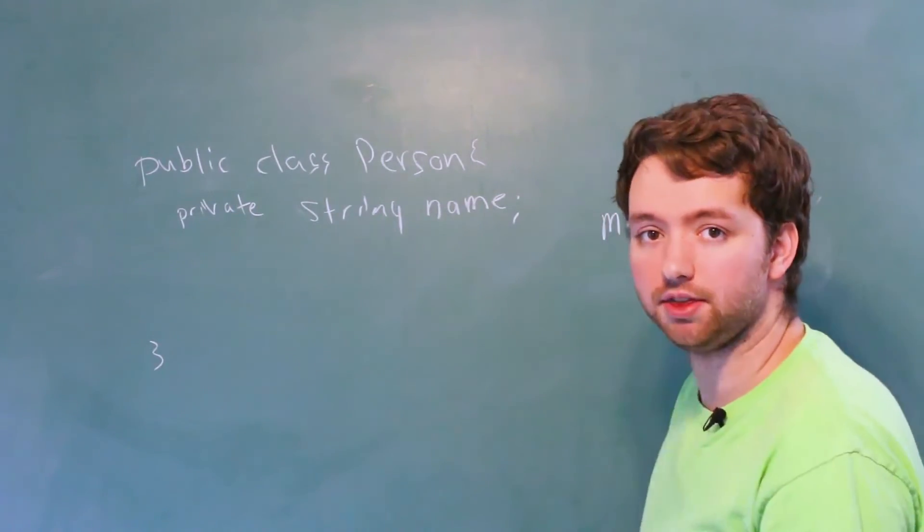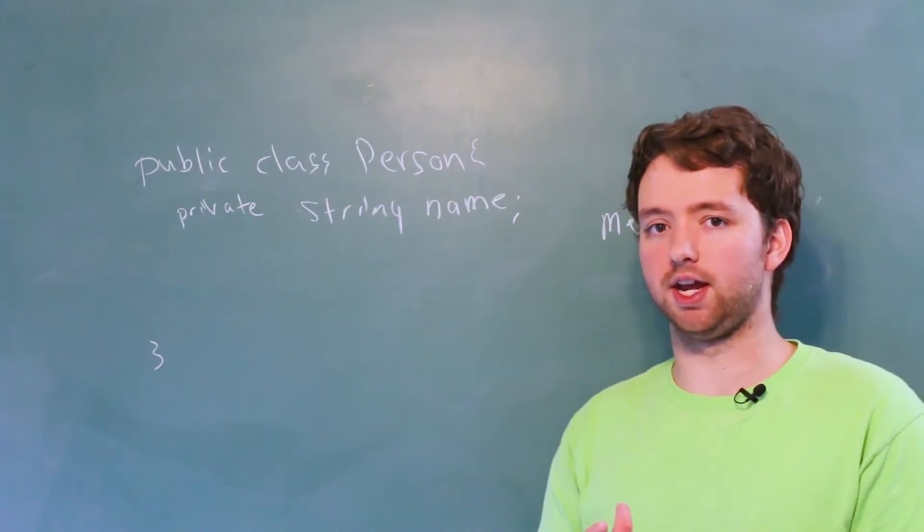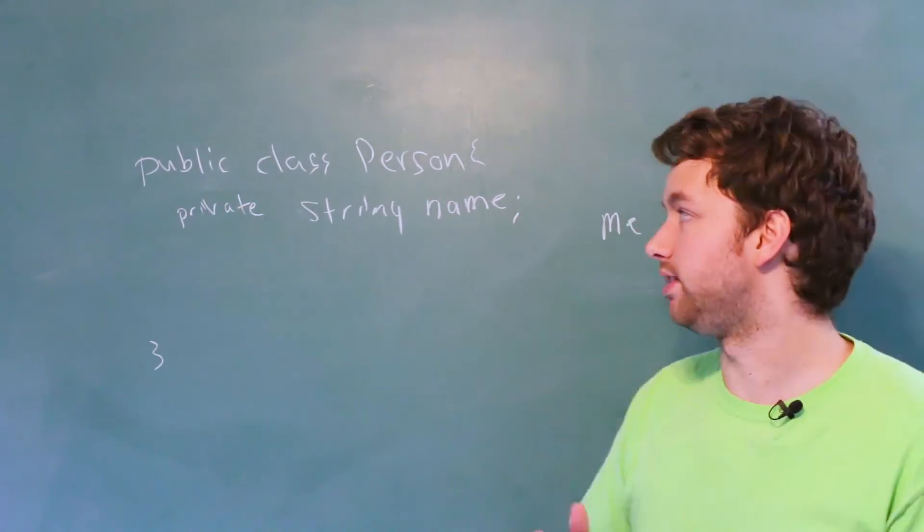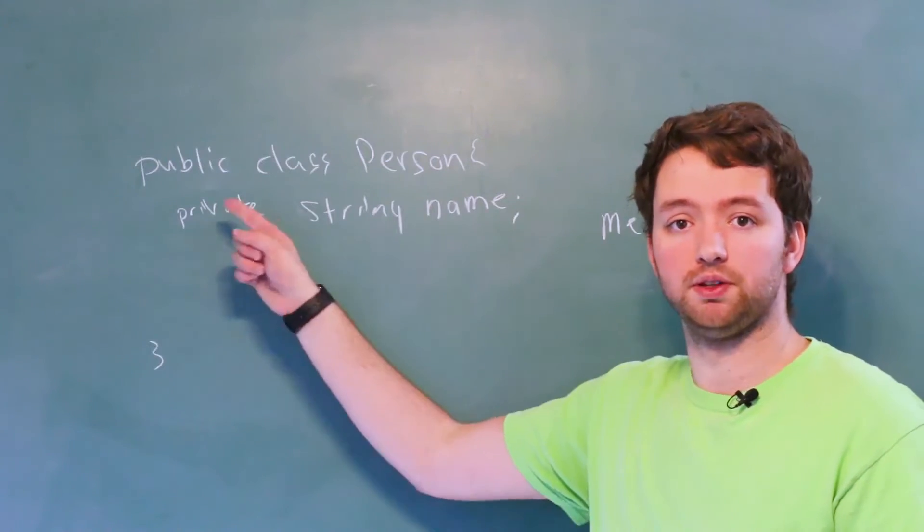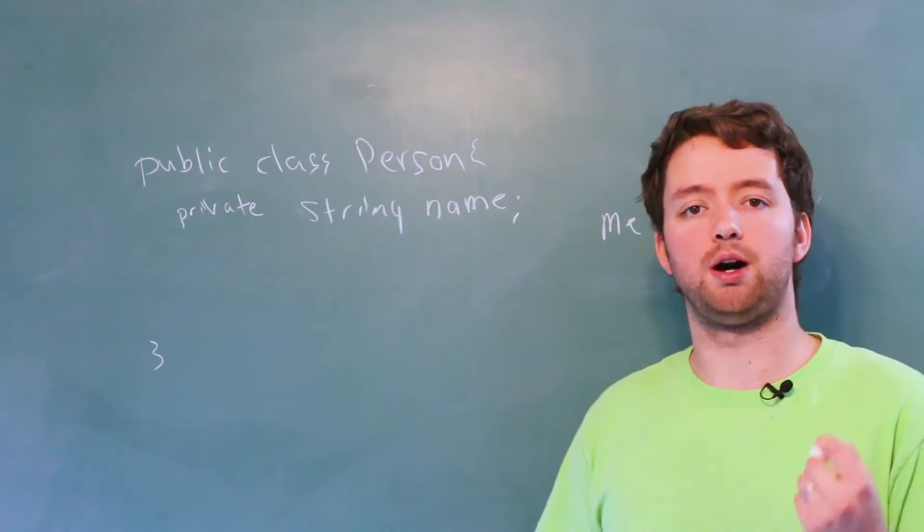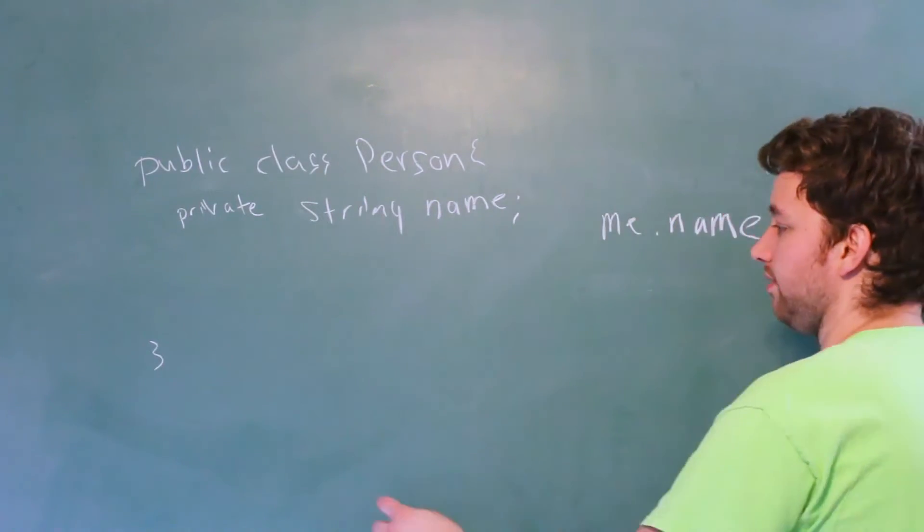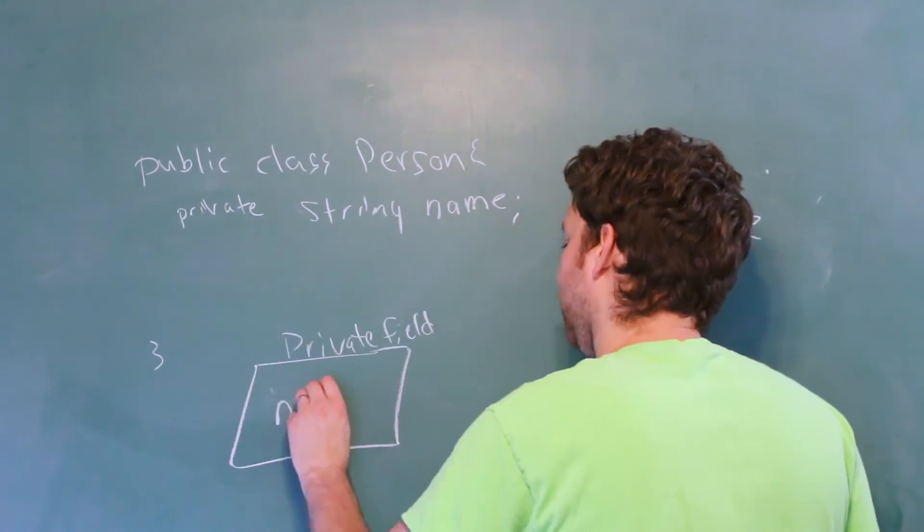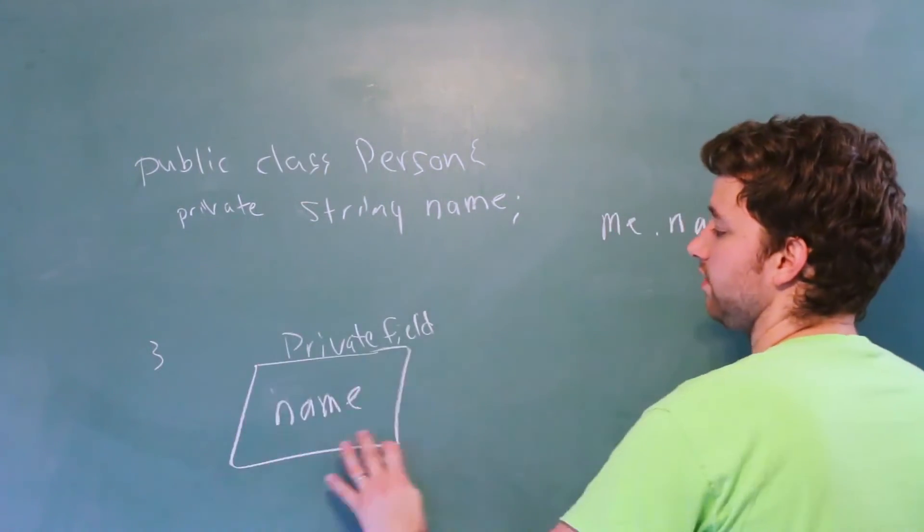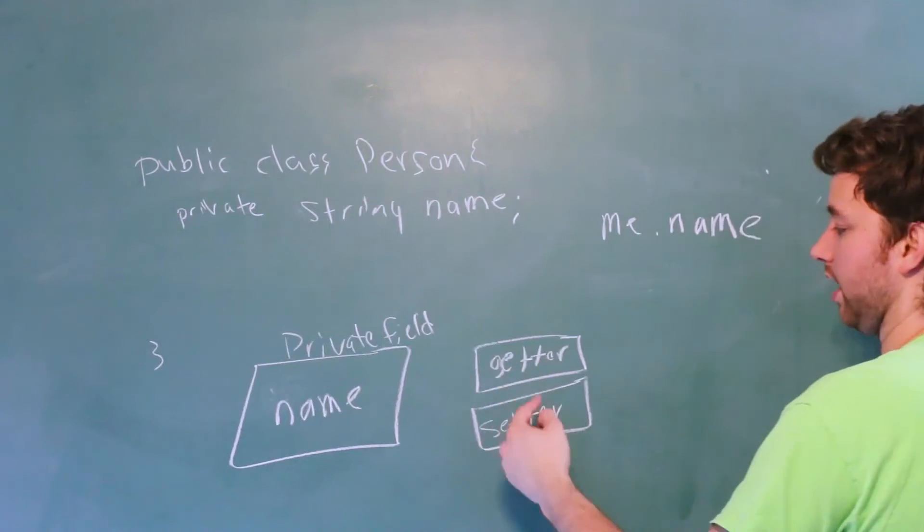For example, we might define some method, a function to work with some data and we might need to store that data somewhere. We can store that data inside of this field. It's private, so we don't have to worry about anywhere else messing it up. A common way this is used is with getters and setters. So basically we can have this private field and we'll call it name. This is just a visual representation of this and we can create methods called a getter and a setter.